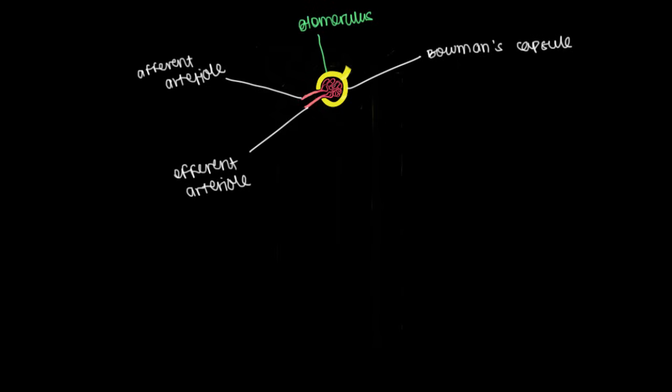After the glomerulus, the next part of the nephron is this guy right here, which is pretty convoluted, wouldn't you agree? But it's close to the glomerulus, so we name it according to those features. It's proximal to the glomerulus, so we call this proximal.